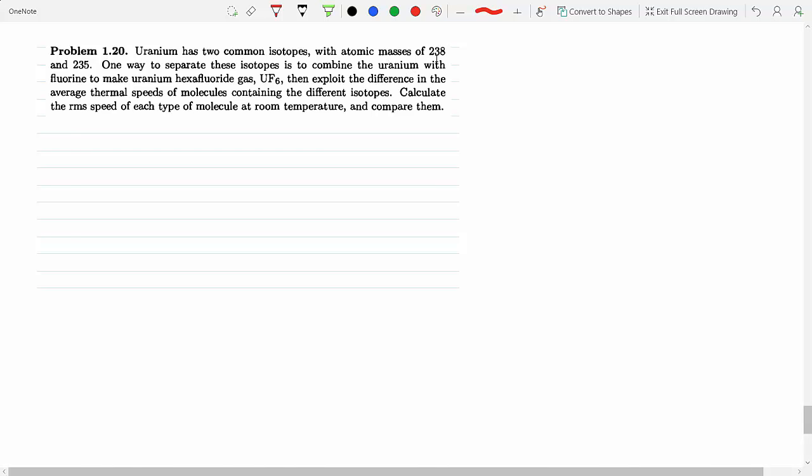Uranium has two common isotopes, one with 238 and one with 235. One way to separate them is to combine them to make the gas UF6. Then as the gas is flying off, depending on which molecule of uranium is contained in that molecule of gas, they use the difference in the average thermal speed.